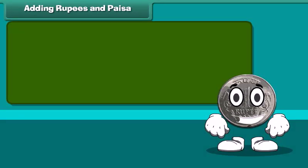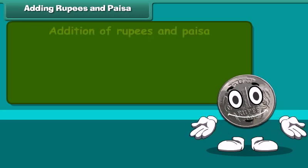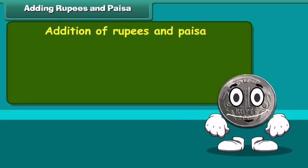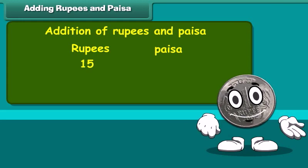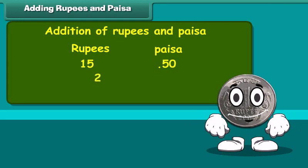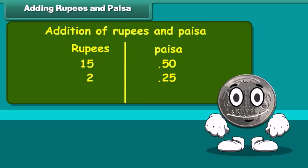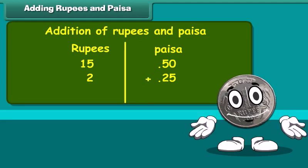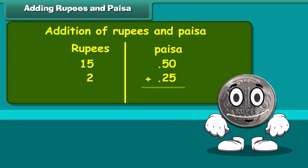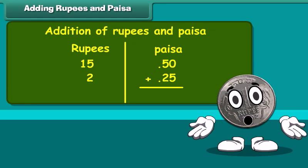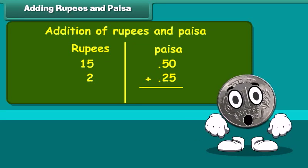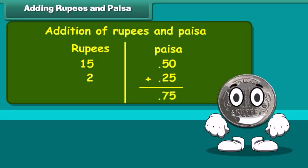Adding rupees and paisa. Let us learn addition of rupees and paisa. Add 15 rupees 50 paisa and 2 rupees 25 paisa. Write the amount in two separate columns of rupees and paisa. First, add the numbers in the paisa column. 50 plus 25 paisa is equal to 75 paisa.